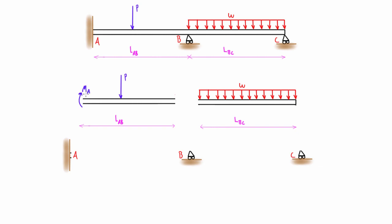We draw on the internal moment at each end. We call this M_AB — the moment at A when looking at B — and then M_BA for the moment at B looking at A. For the next span, M_BC is the moment at B looking at C, and M_CB is the moment at C looking at B. We can also draw on the shear forces: V_A, V_B1 on one side of the support, V_B2 on the other side, and V_C.